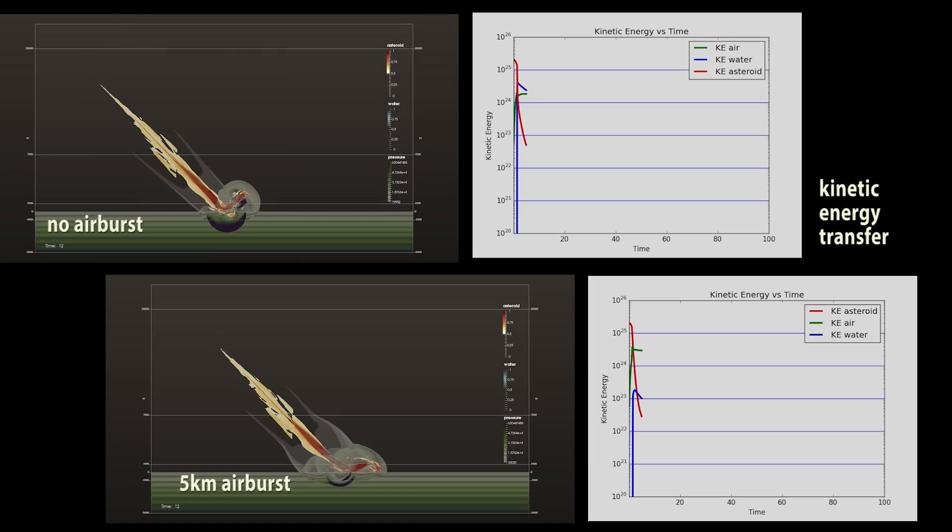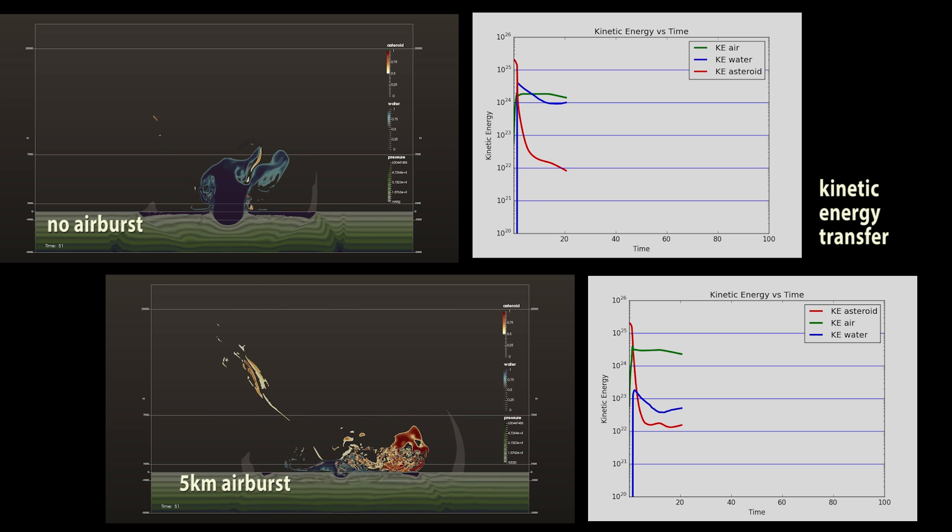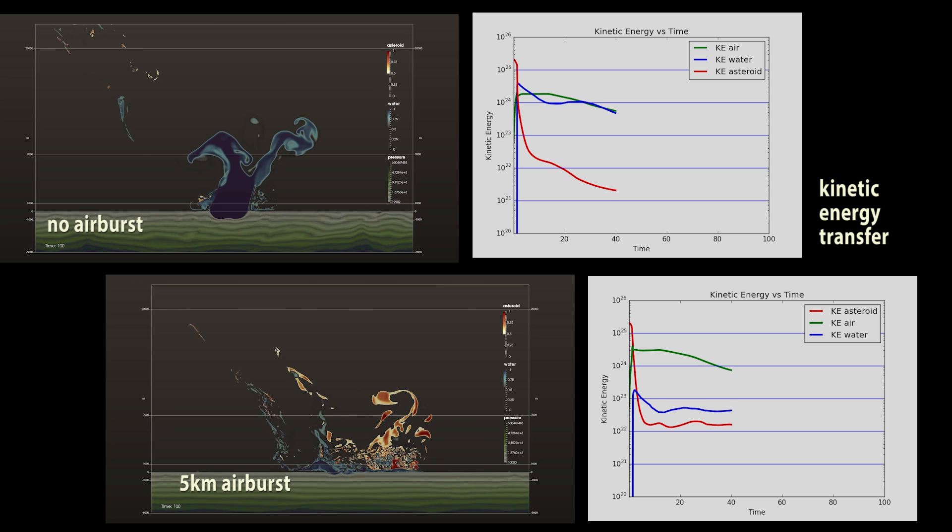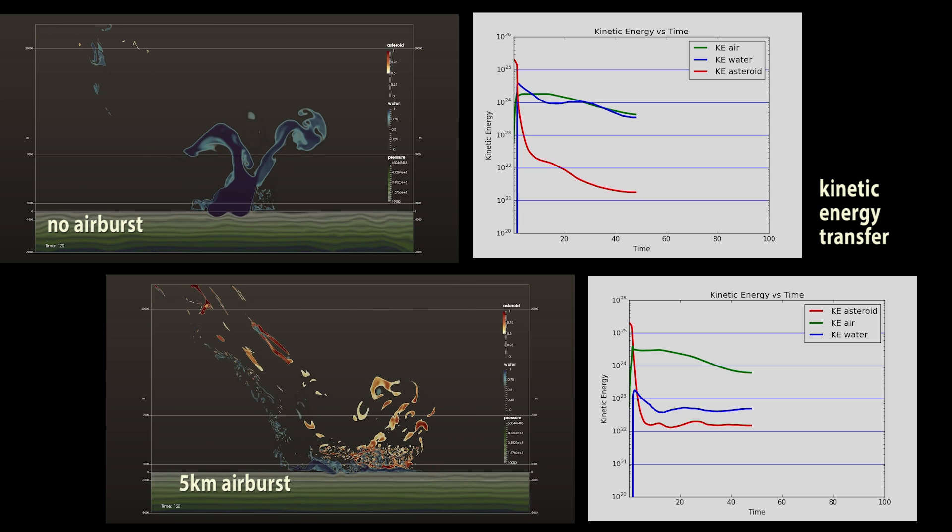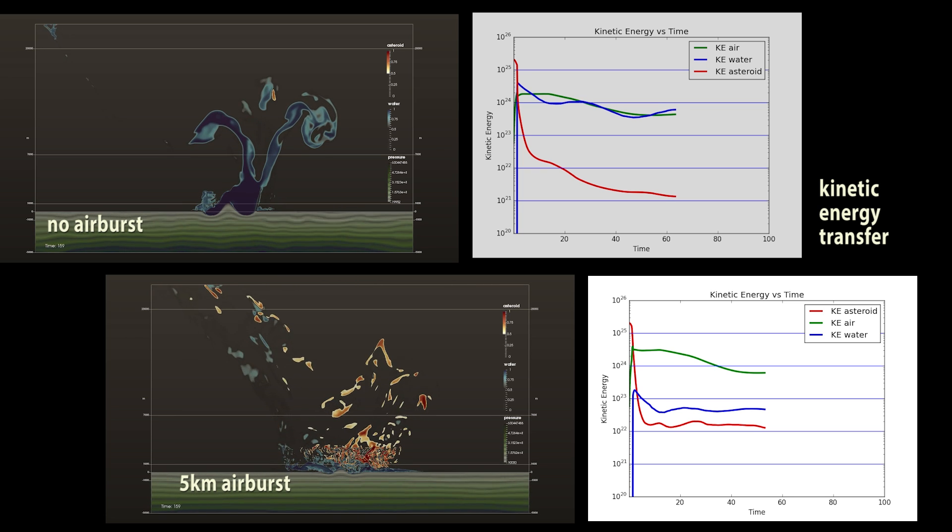Here we see the difference in energy transfer with and without an airburst. Whether or not there is an airburst changes how much kinetic energy is transferred to the air and water. An airburst breaks the asteroid apart, so that much of it skims the surface of the water rather than slamming into it.